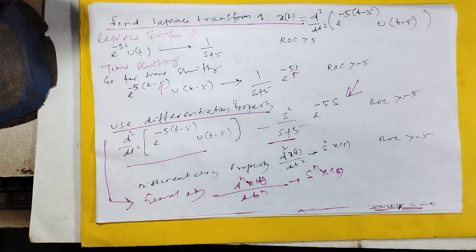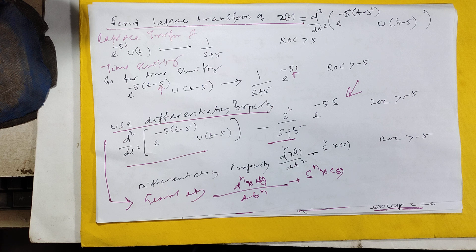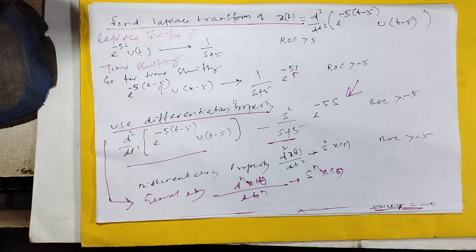Find the Laplace transform of x(t) equals d² by dt² under bracket e to the power 2t minus 5t minus 5 into u(t-5).